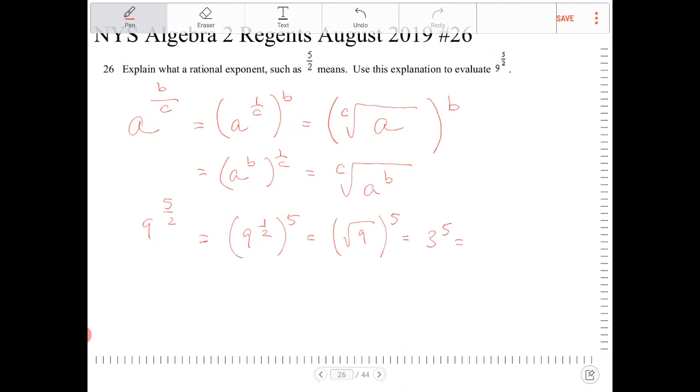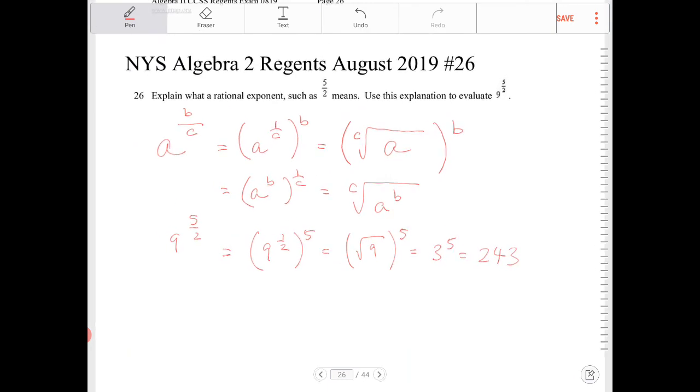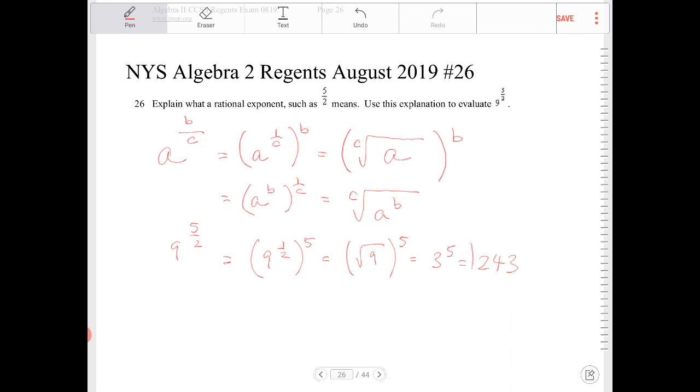And what exactly is 3 to the 5th? Well I know 3 to the 4th is 81, so let's multiply that again. That turns into 243. So 9 to the 5 halves is 243. Here we go.